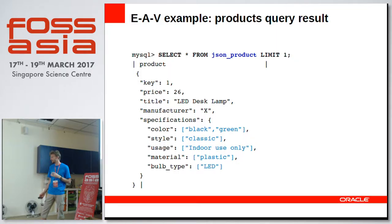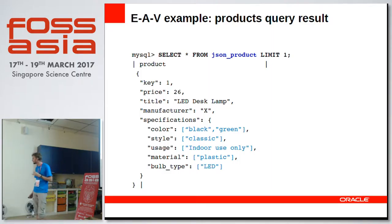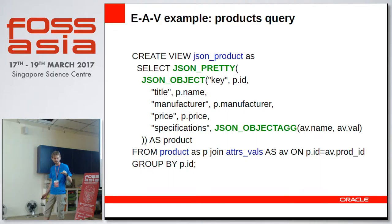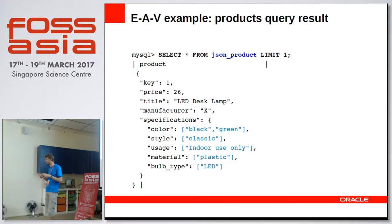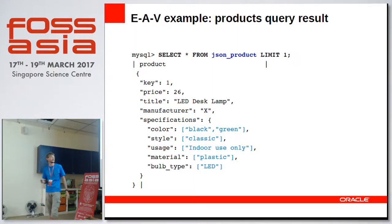Question: what is the JSON_OBJECTAGG output? JSON_OBJECTAGG is used here for the specification field. It creates this object — five lines returned inside the group by product ID — and accumulates over that group the key name and value into a single object.